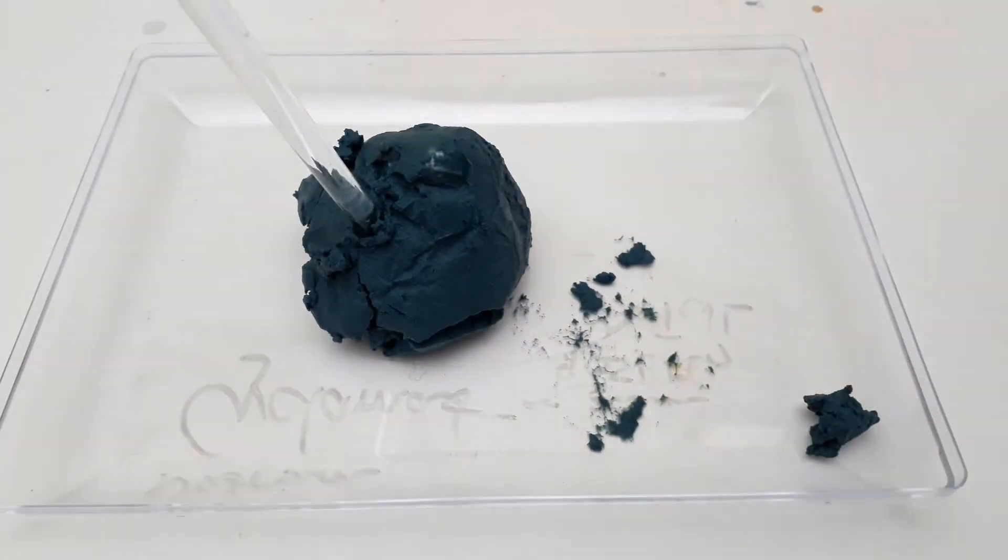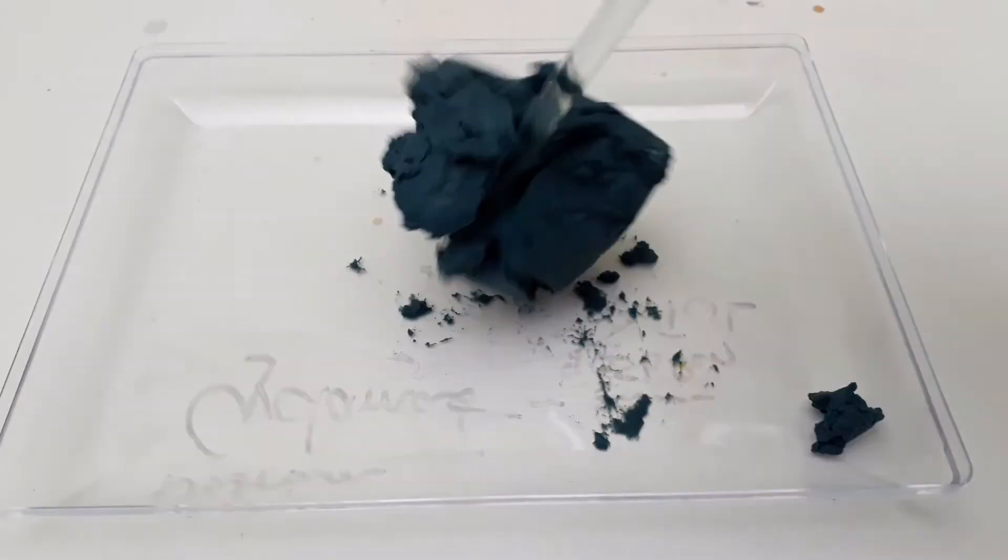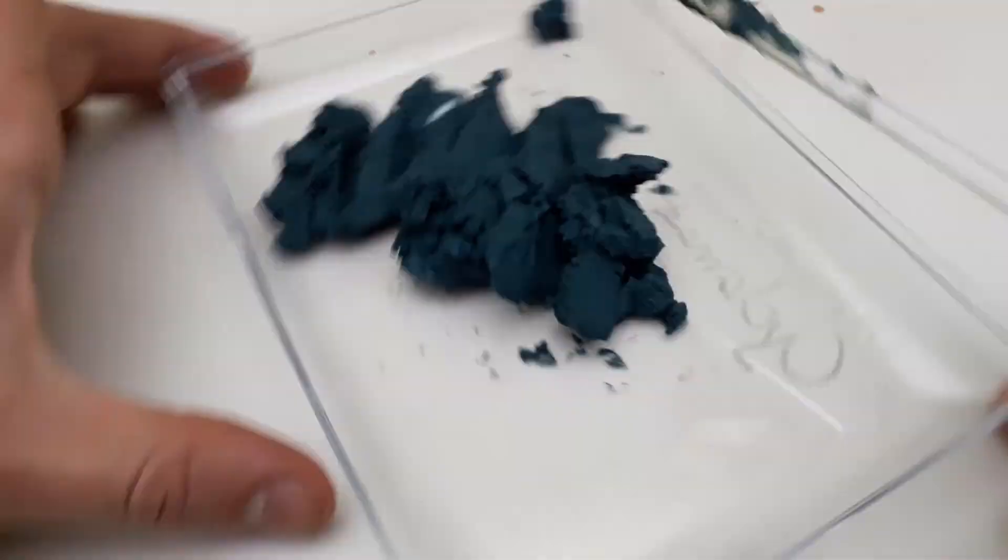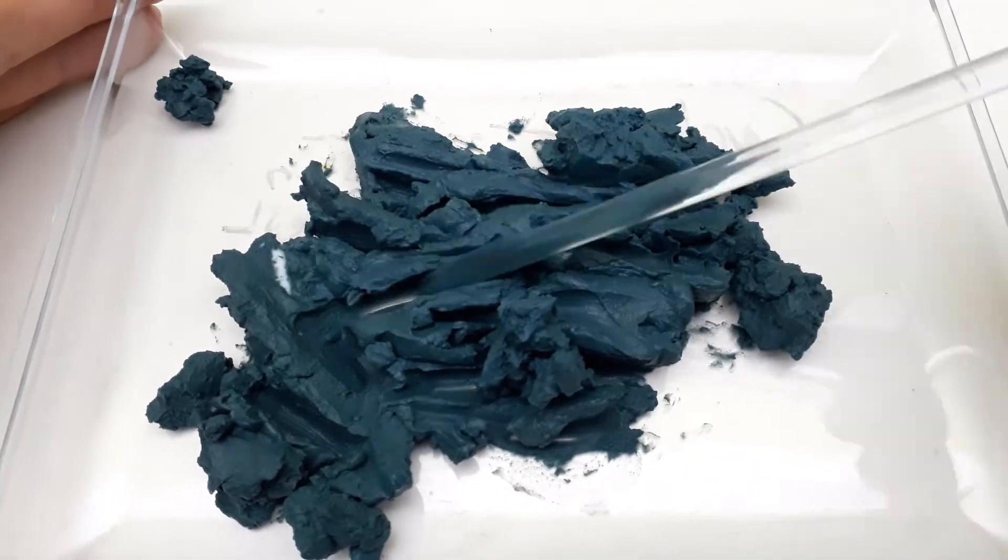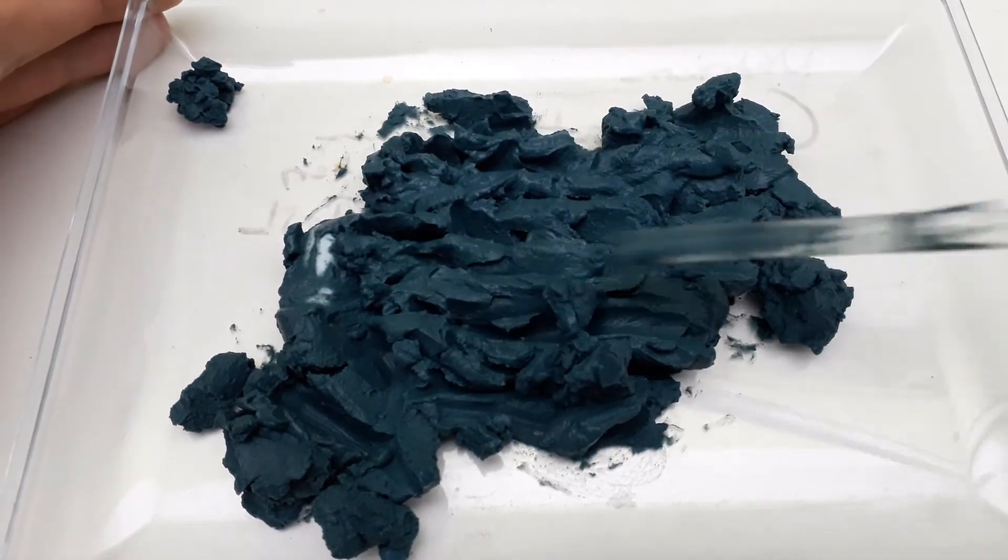This is how the precipitate looks like after being washed several times with water. I spread it out on this plastic dish and let it dry over the course of several days and also use an infrared light to speed up the process considerably.